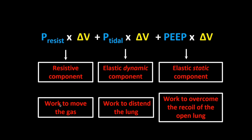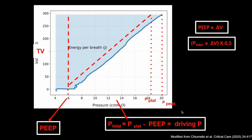When we add up all three components, we get the total mechanical power. Breaking down the graph: the first part is the static component which is the PEEP; as we develop the tidal volume, this becomes the dynamic component; and then there is the resistive component. P-tidal is P-plat minus PEEP, which is the driving pressure, and this is how we get the peak pressure and the plateau pressure.